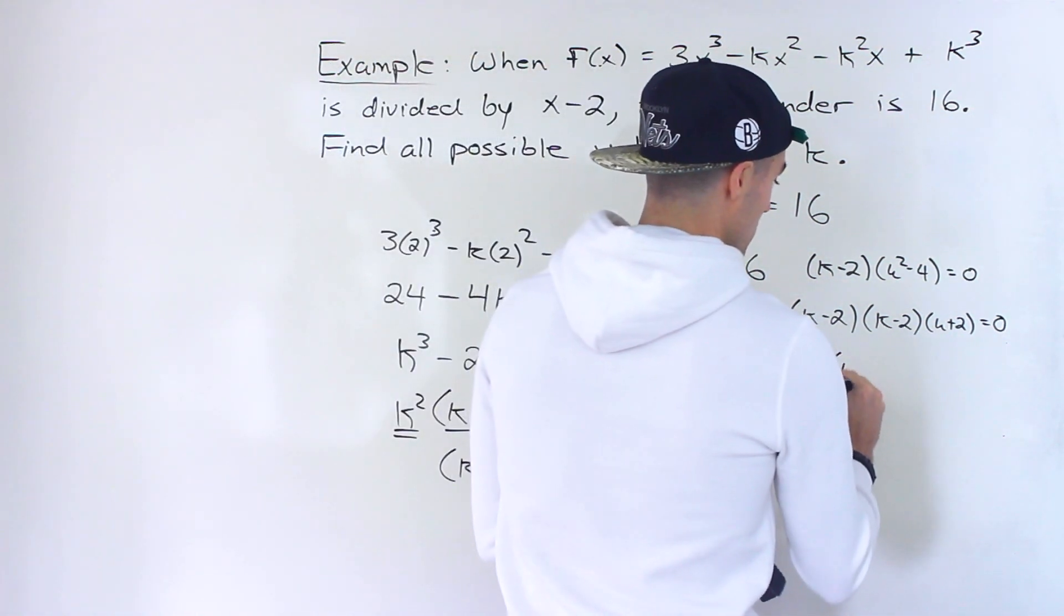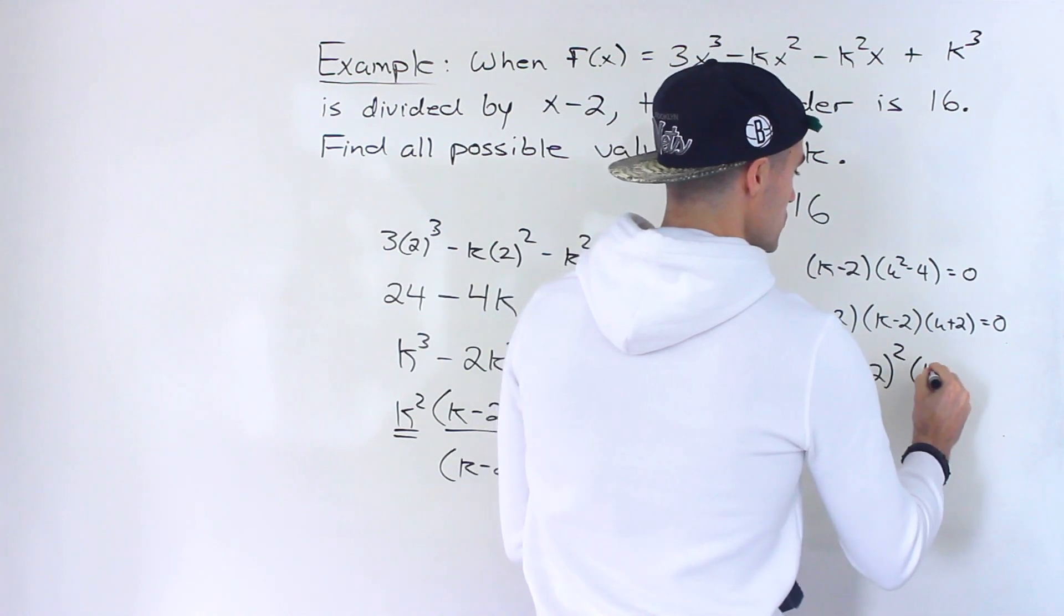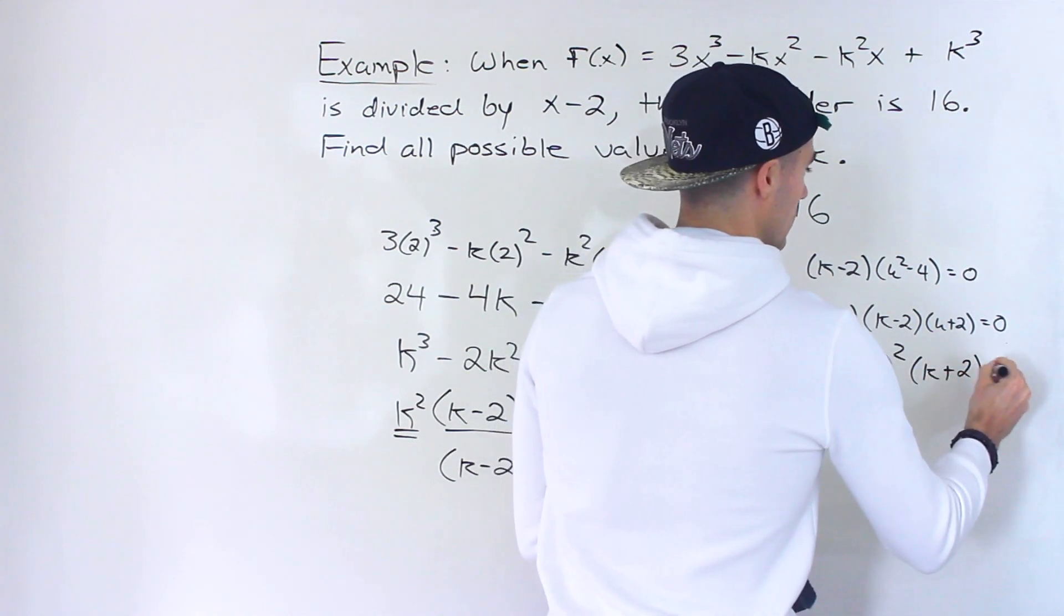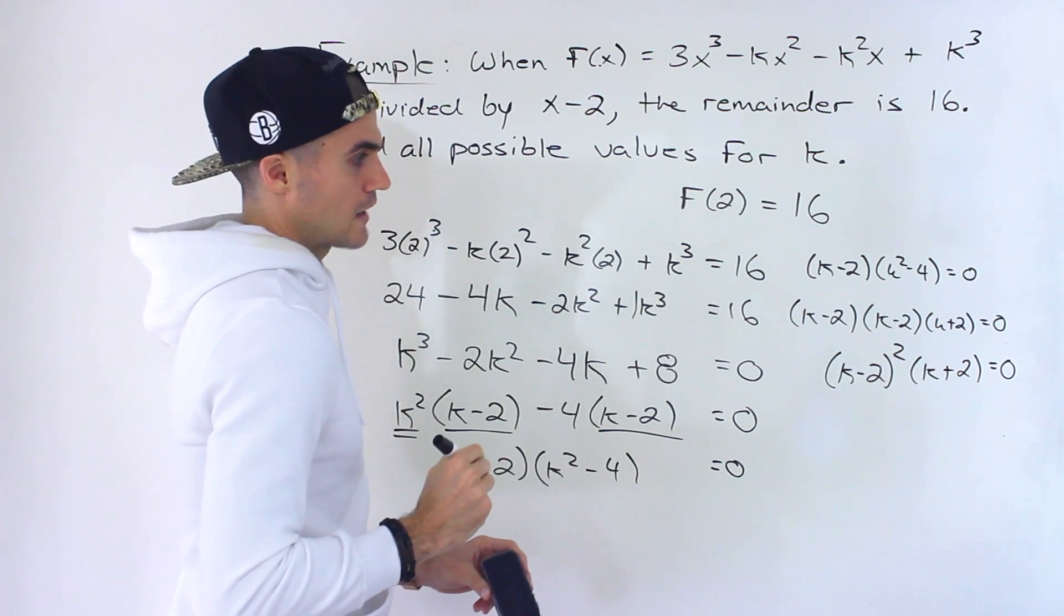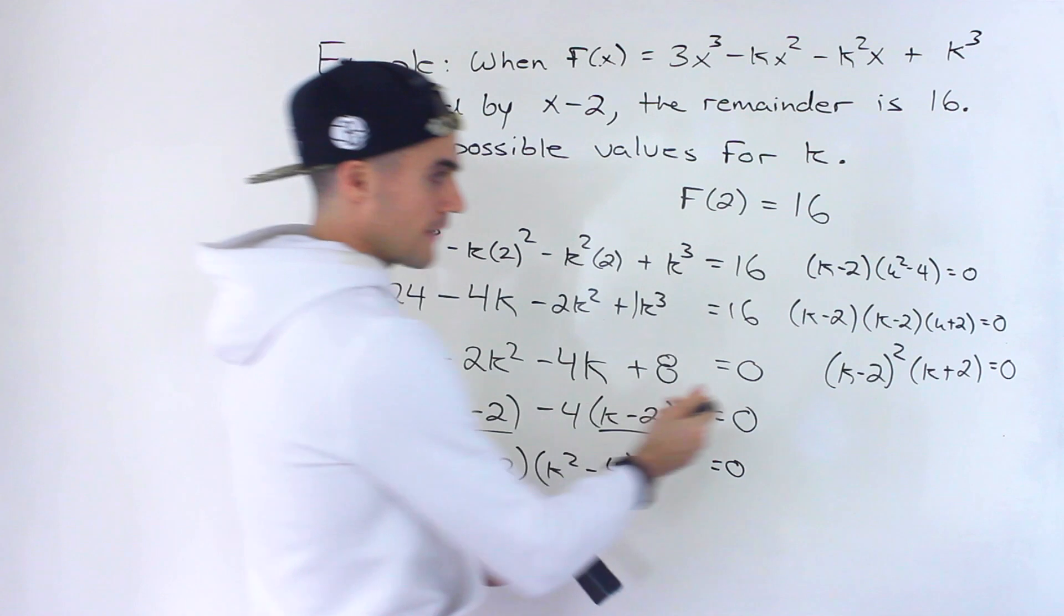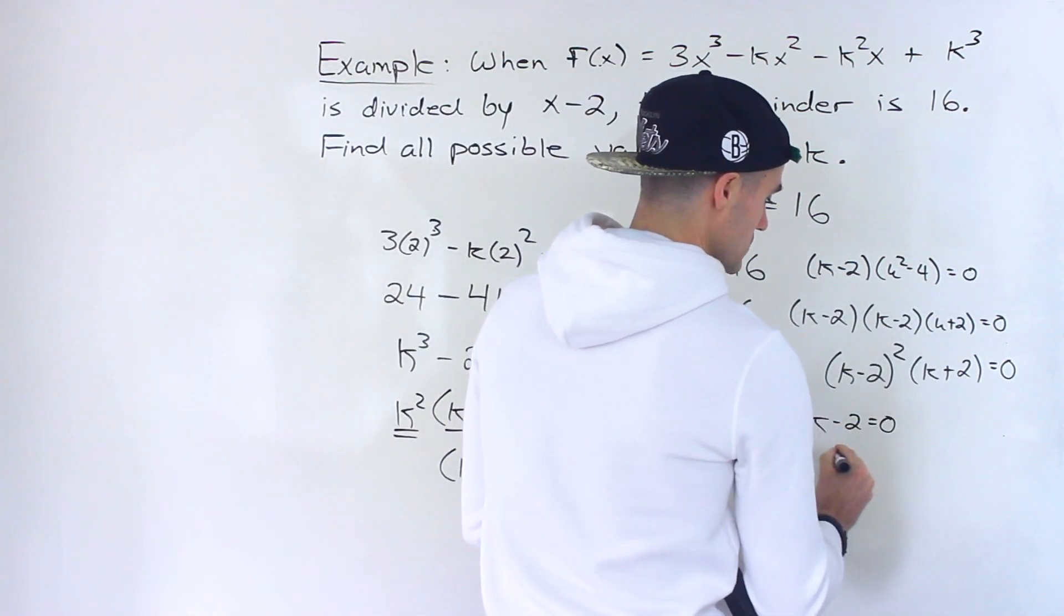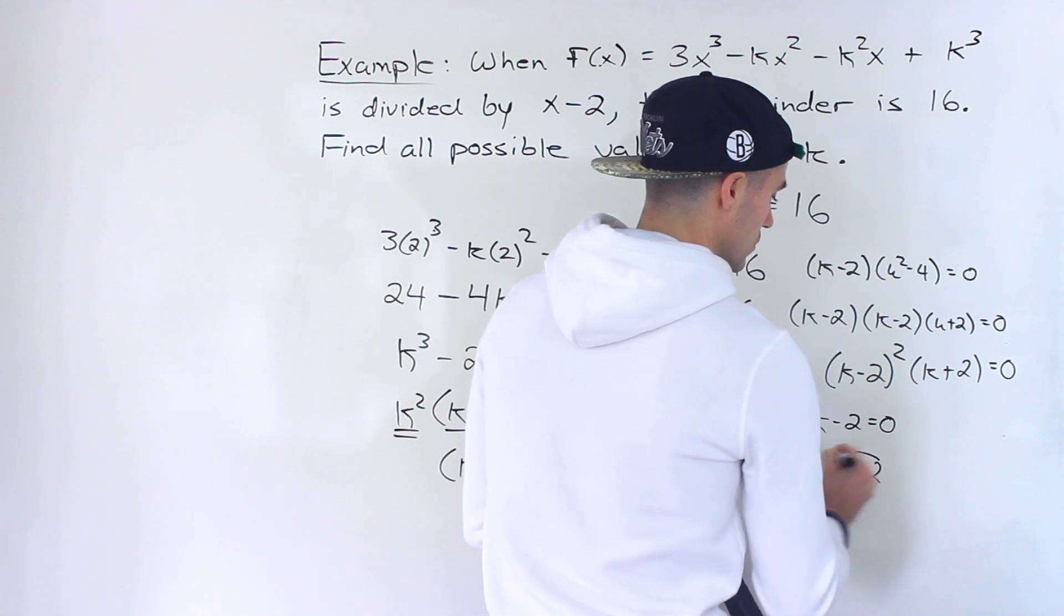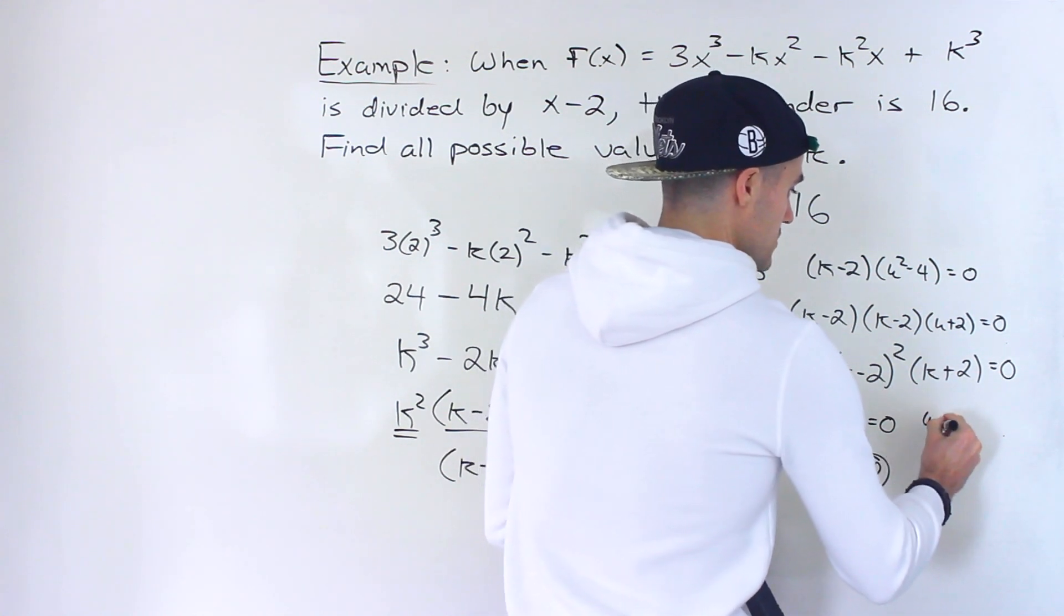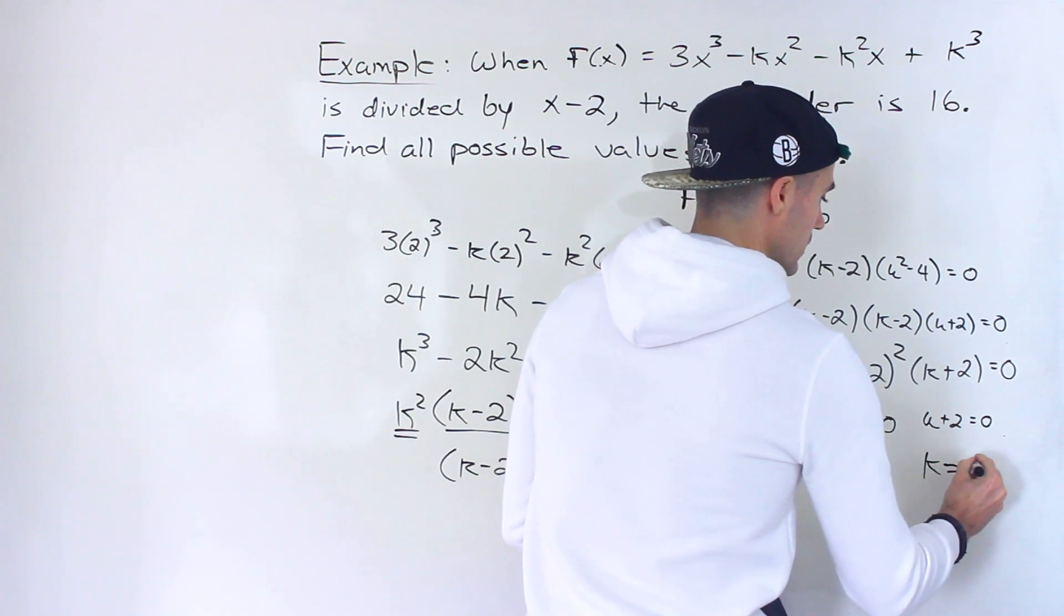That gives us (k - 2)²(k + 2) = 0. For this to equal 0, either k - 2 = 0, so k = 2, or k + 2 = 0, so k = -2. Those are the two possible values.